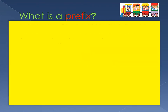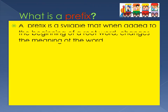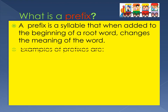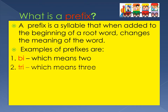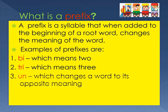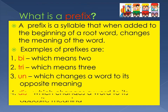What is a prefix? A prefix is a syllable that, when added to the beginning of a root word, changes the meaning of the word. Examples of prefixes are 'bi', which means two, and 'tri', which means three, and 'un' which changes a word to its opposite meaning, and 'dis' which also changes a word to its opposite meaning.